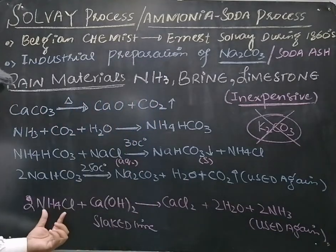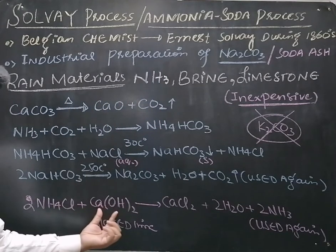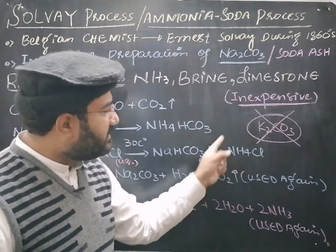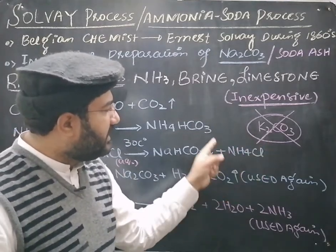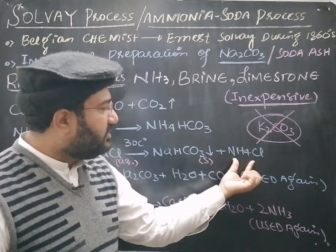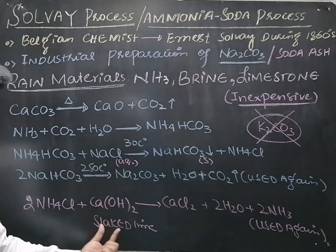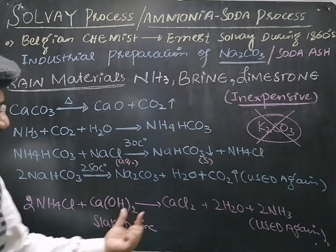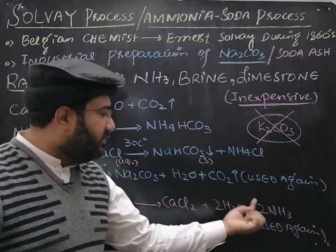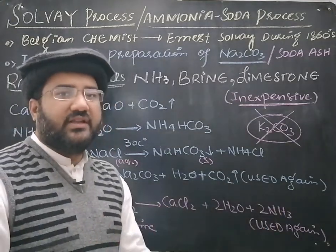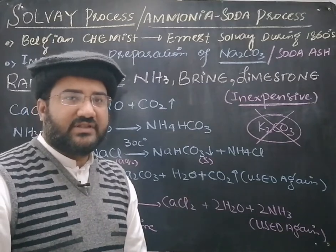The ammonium chloride produced as a by-product during the Solvay process is made to react with calcium hydroxide, also called slaked lime. This reaction produces calcium chloride, water, and ammonia, and this ammonia is reused in the Solvay process.